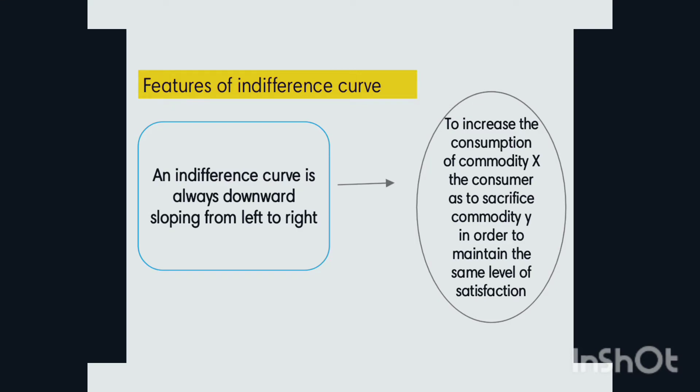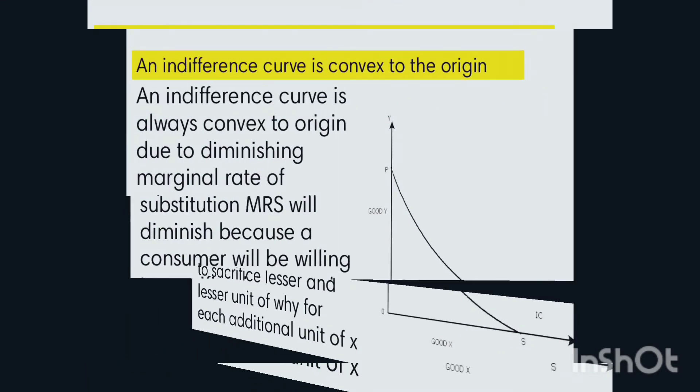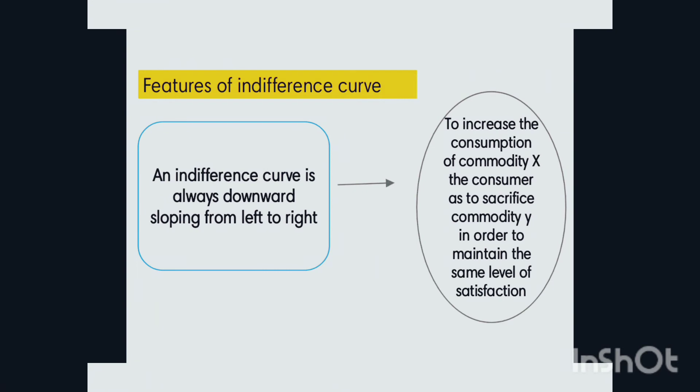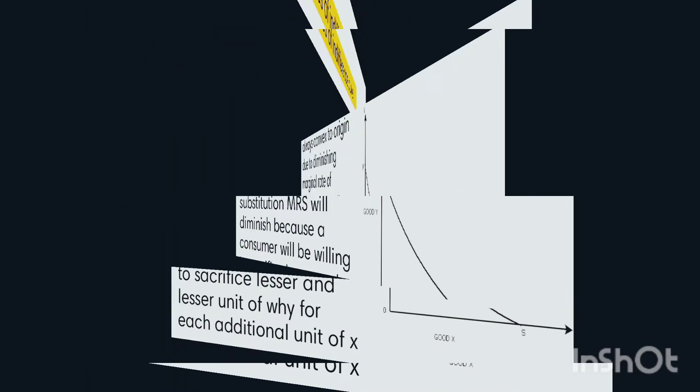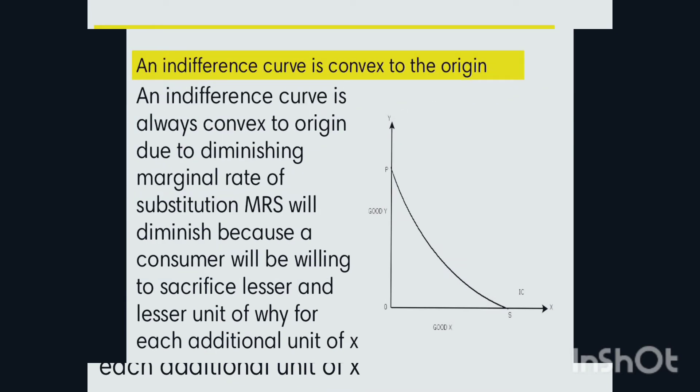An indifference curve is always downward sloping. To increase consumption of commodity X, the consumer has to sacrifice commodity Y in order to maintain the same level of satisfaction. The consumer sacrifices commodity Y in order to consume commodity X while keeping satisfaction constant.